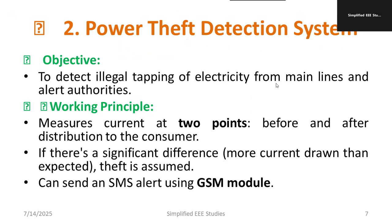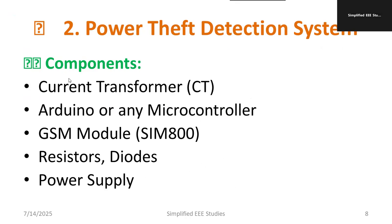The next project is Power Theft Detection System. The objective is to detect illegal tapping of electricity from the main lines and alert authorities. The working principle is to measure current at two points — before and after the distribution to the consumer. If there is a significant drop, meaning more current drawn than expected, we assume theft has occurred.